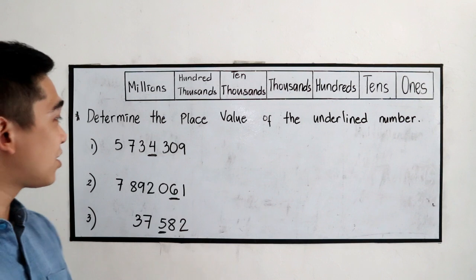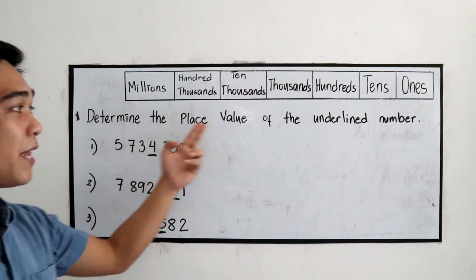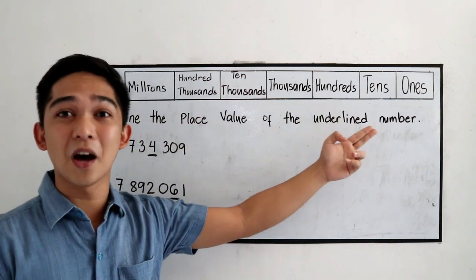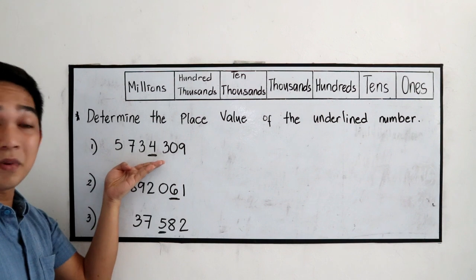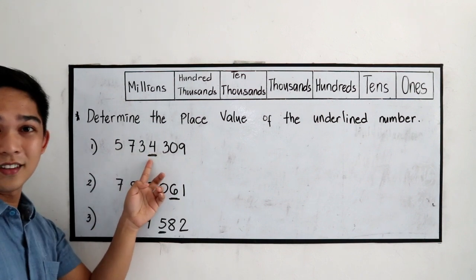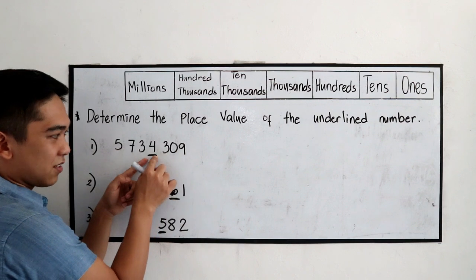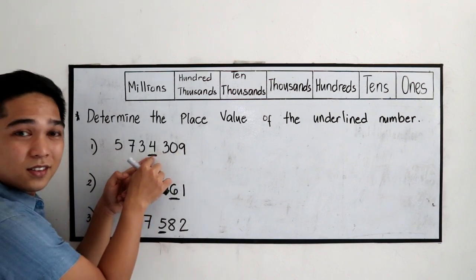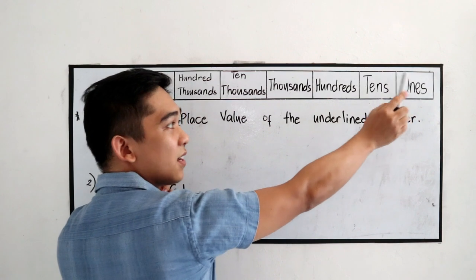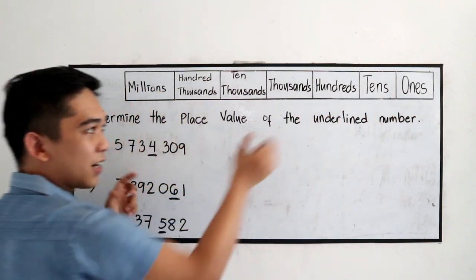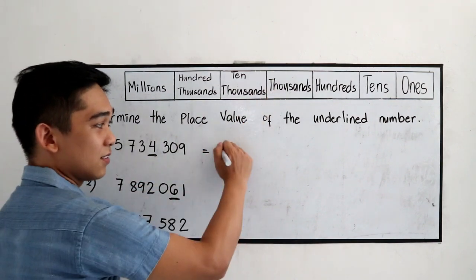Now, I have here exercises number 1, 2, and 3. The instruction is, determine the place value of the underlined number. In number 1, the underlined number is 4. So, from right, looking at our place value, we have 4 units going to left. So, 1, 2, 3, 4. So, from our place value, we need to count 4. Ones, tens, hundreds, thousands. That means our place value in number 1 is in the thousands.